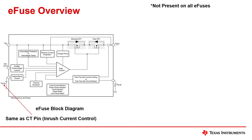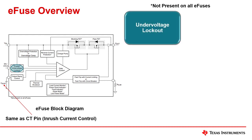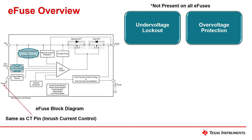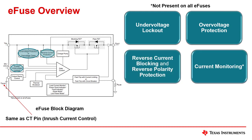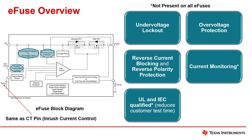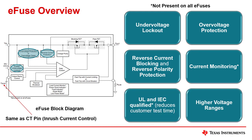Next is e-fuses, which are power switches with the most integrated protection. They are generally used for input power protection and can handle a broad range of input voltages and currents. They have key protection features, such as under voltage lockout, over voltage protection, reverse current blocking and reverse polarity protection, current monitoring, are UL and IEC qualified, and support higher voltage ranges. The same solution implemented with discrete components would require more components, board space, and will cost more.